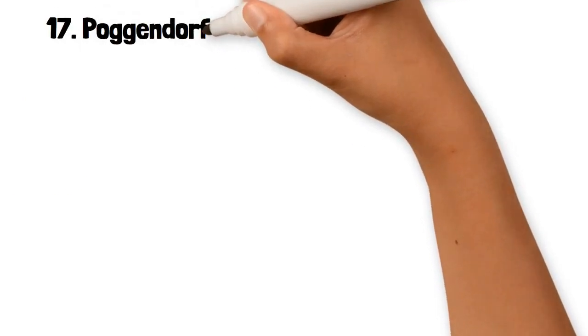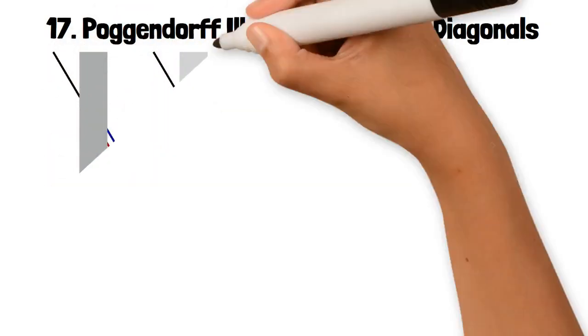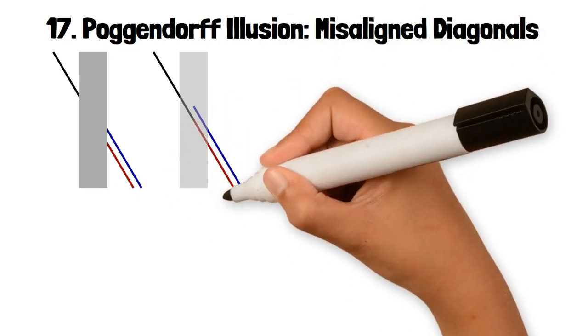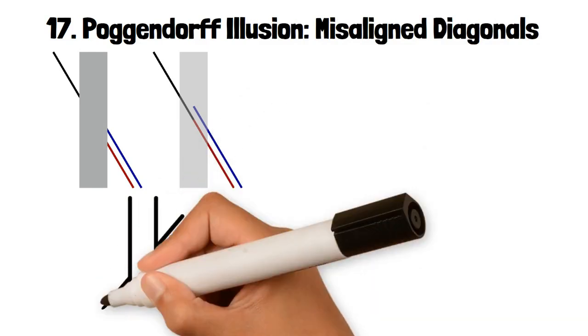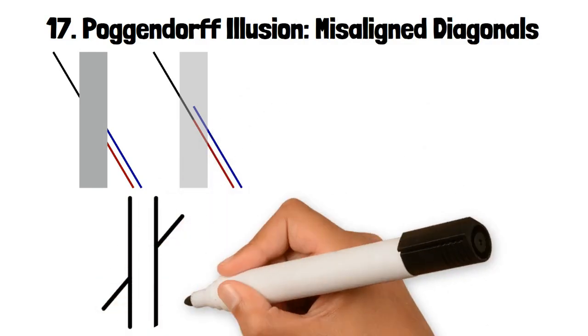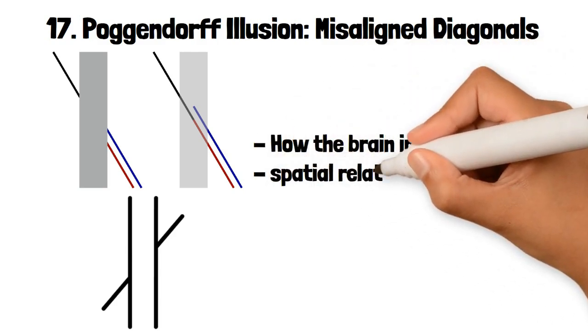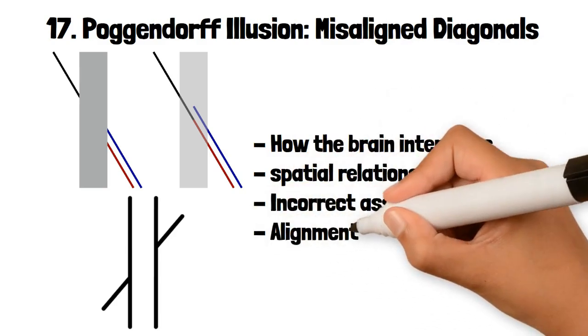17. Poggendorff Illusion: Misaligned Diagonals. The Poggendorff illusion involves a diagonal line that appears misaligned when it crosses between two parallel lines or a solid object. The brain perceives the segments of the line as being offset from each other even though they are actually aligned. This illusion demonstrates how the brain interprets spatial relationships and depth, sometimes leading to incorrect assumptions about alignment and continuity.